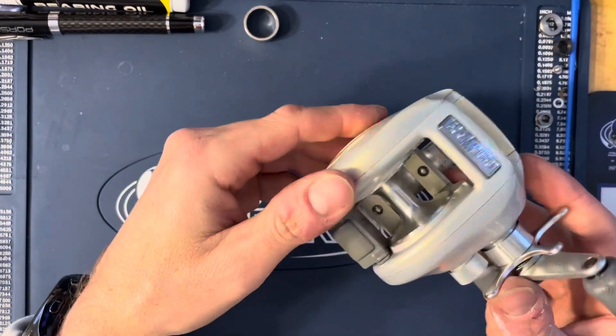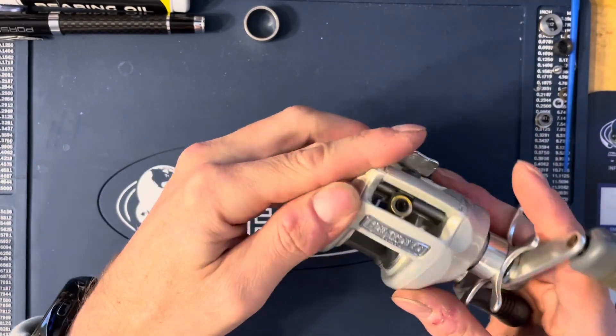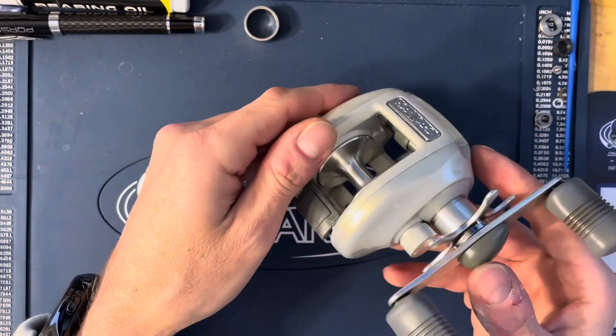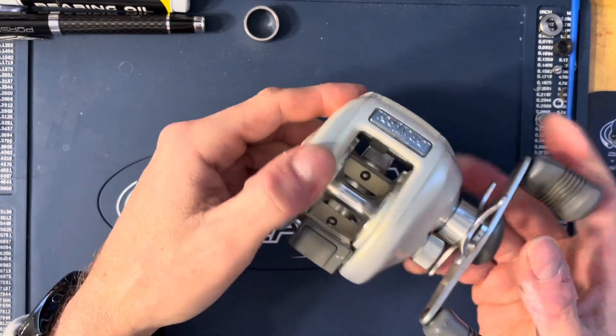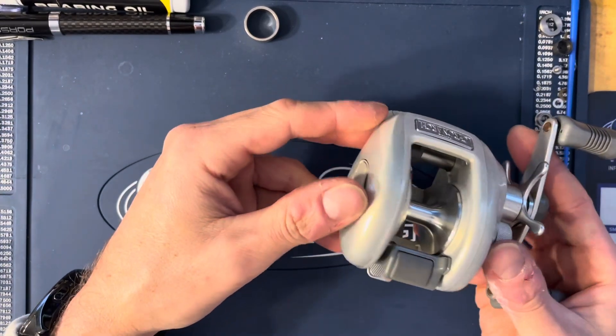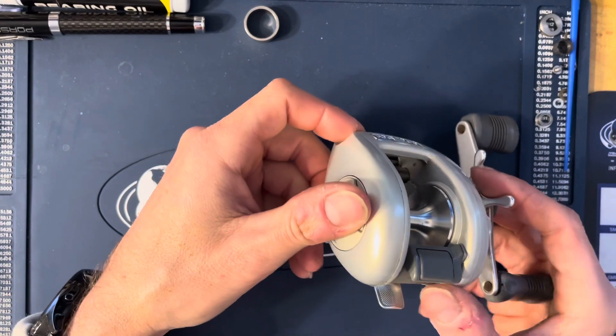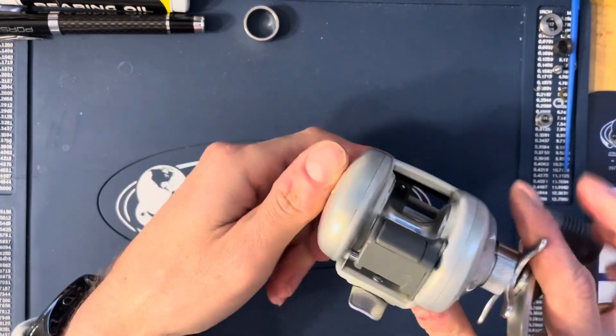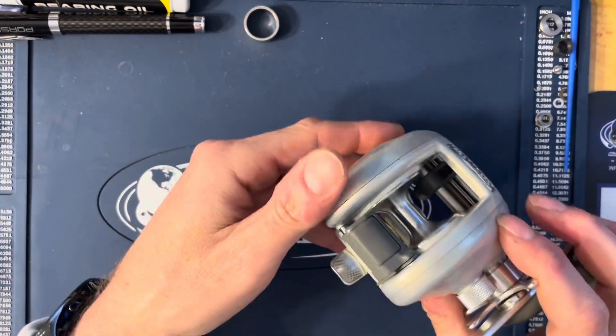This is one of the greatest reels ever made from Shimano. This thing is absolutely amazing and in pristine shape. I think he said it only had like 120 or 150 casts on it total. Little mark here but that's it, this thing is absolute mint.